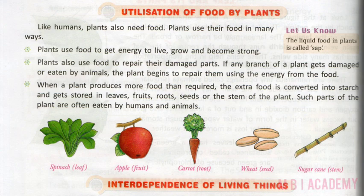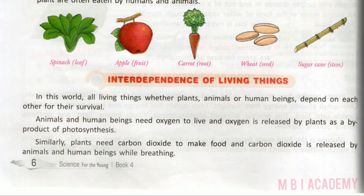The next topic is called interdependence of living things. Interdependence means that in this world, all living things — whether plants, animals or human beings — depend on each other for their survival. Animals and human beings need oxygen to live, and oxygen is released by plants as a byproduct of photosynthesis.